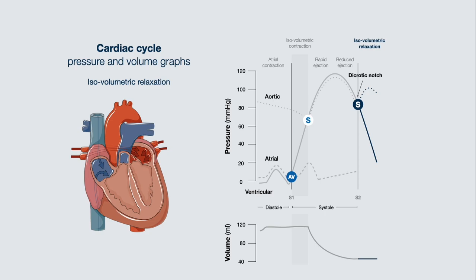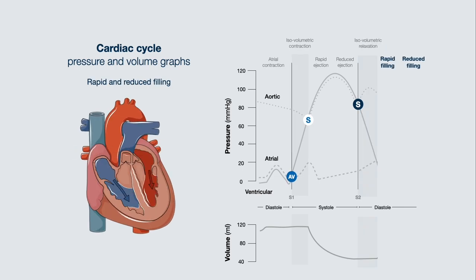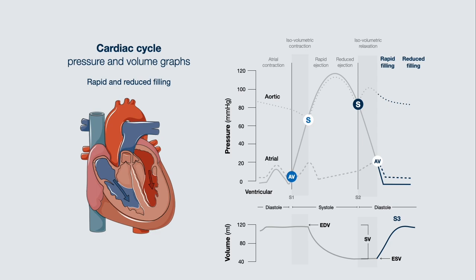During this time, atrial pressures continue to rise as they fill. During rapid filling and reduced filling, the ventricular volume increases, and this process can cause an S3 if the ventricle is compliant. Pressures in the ventricles and atria decline. When atrial pressures exceed ventricular pressures, the AV valve opens. On the volume curve, the end diastolic volume and end systolic volume are identified, and the difference between them is the stroke volume.